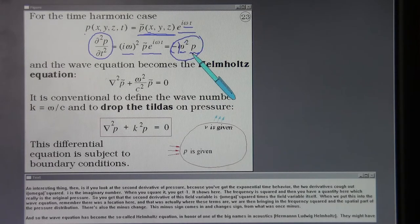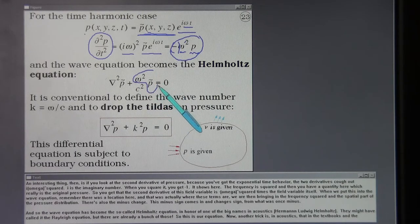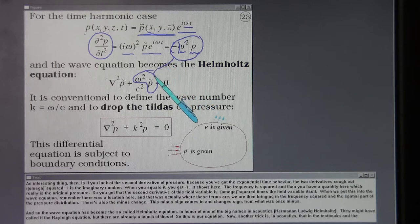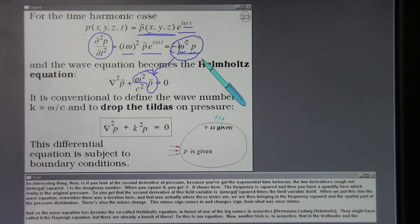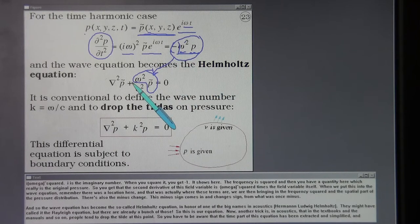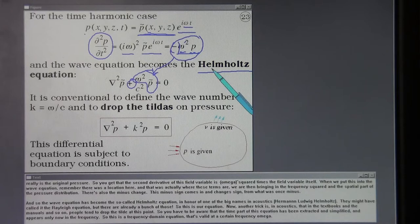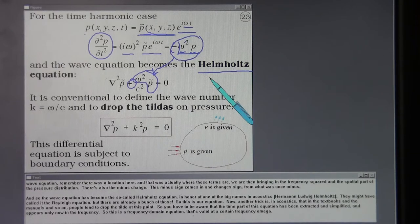When we put this into the wave equation, remember there was a Laplacian here and it actually is where these terms are. We are then bringing in the frequency squared and the spatial part of the pressure distribution. There is also the minus sign. This minus sign comes in and changes the sign from what was once minus. And so the wave equation has become the so-called Helmholtz equation in honor of one of the big names in acoustics. You might have called it the Rayleigh equation but there is already a bunch of those.